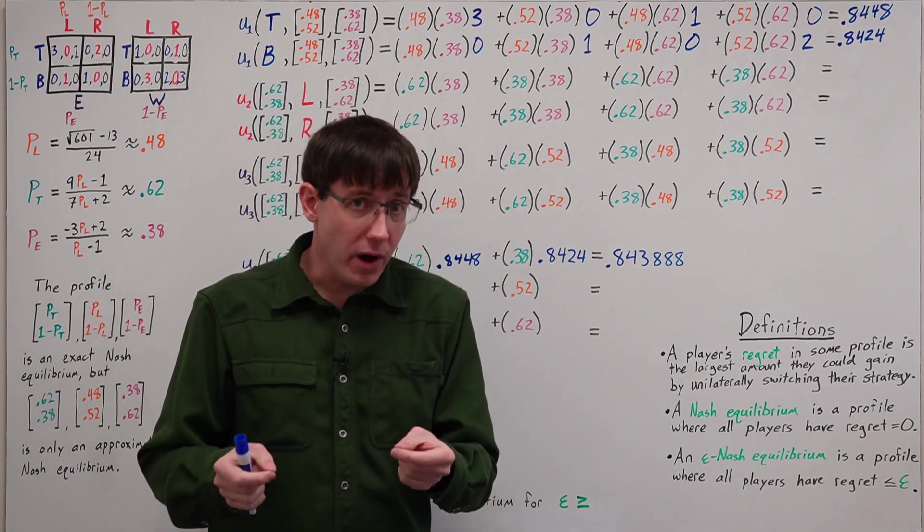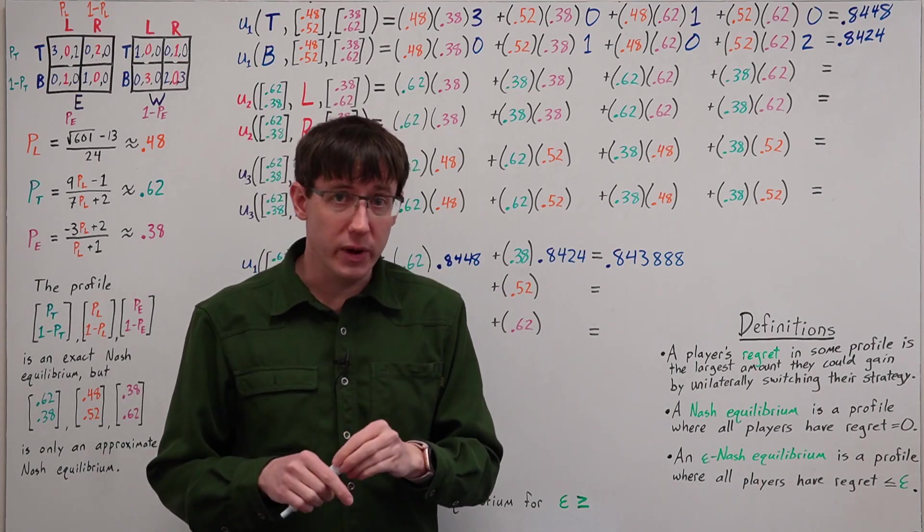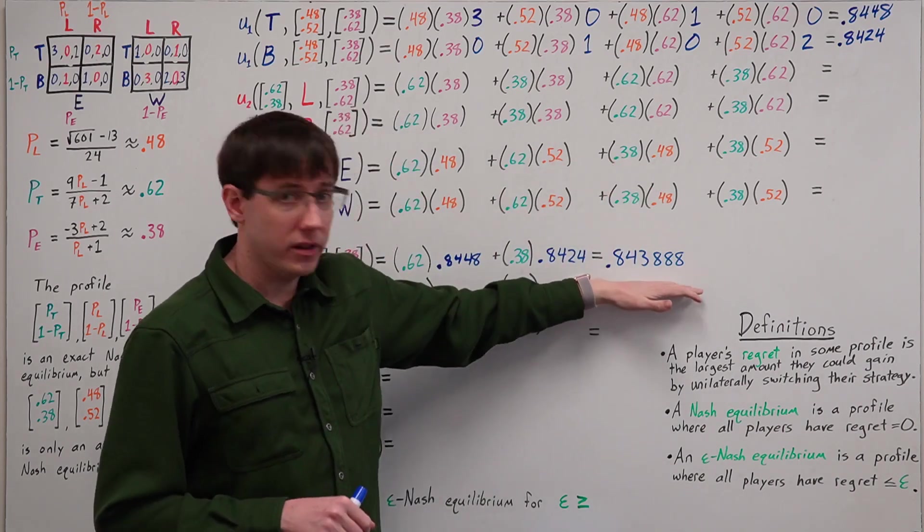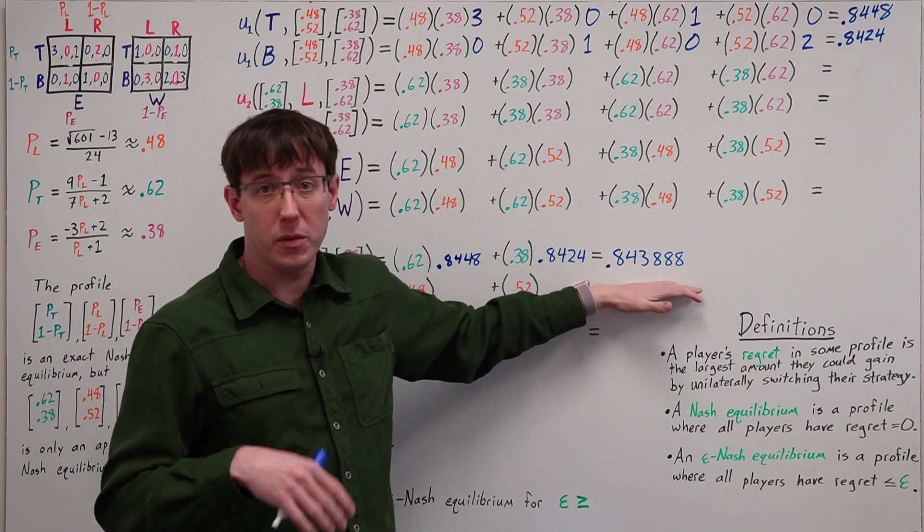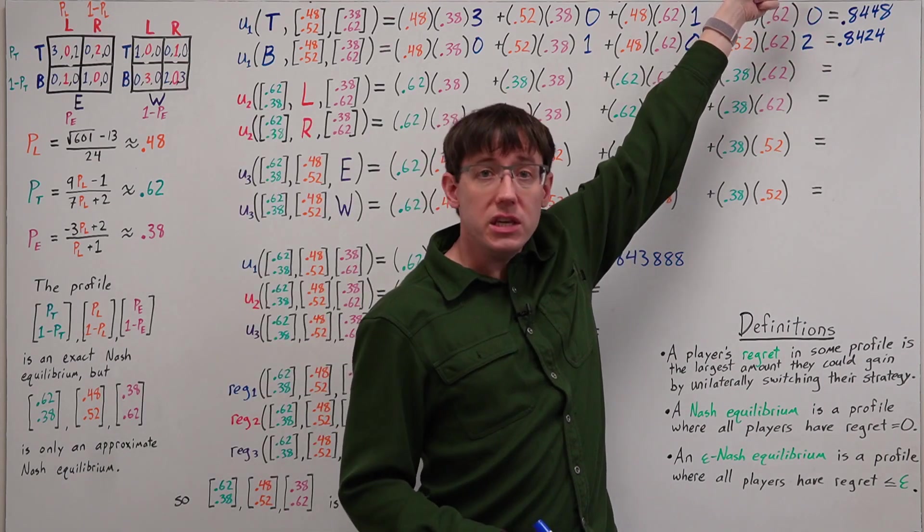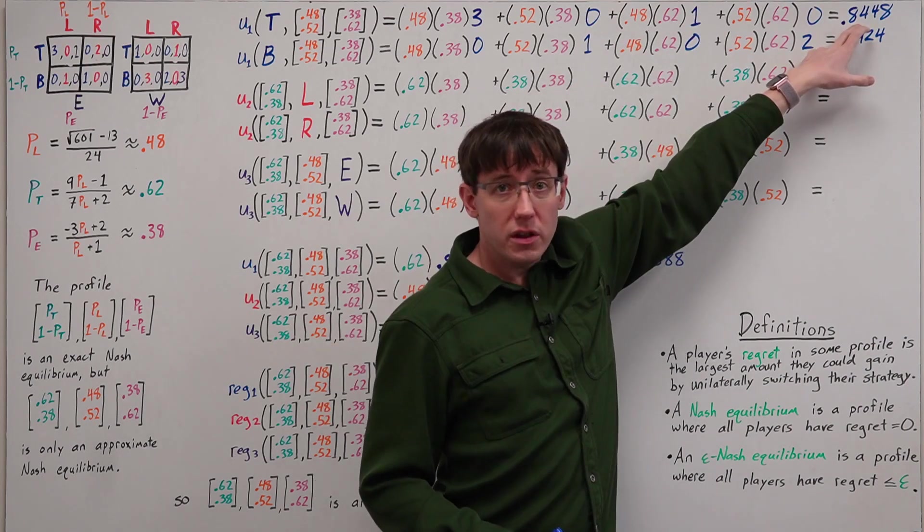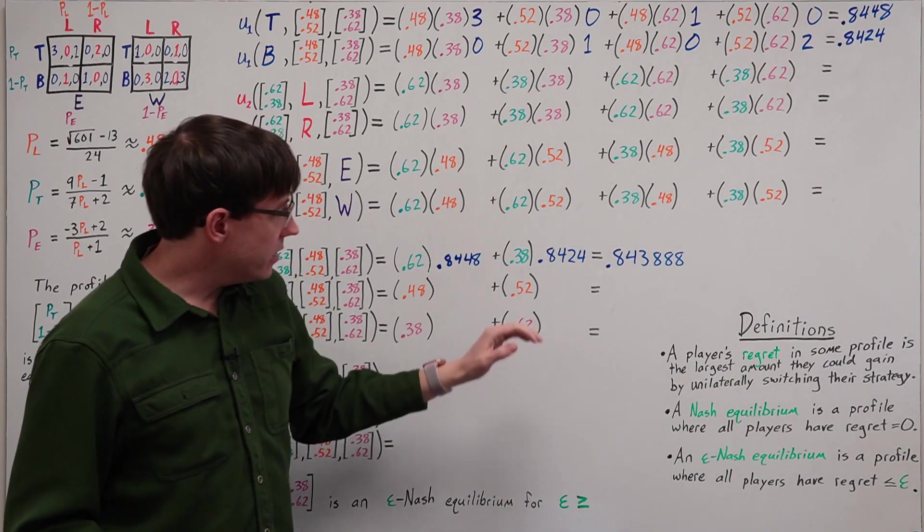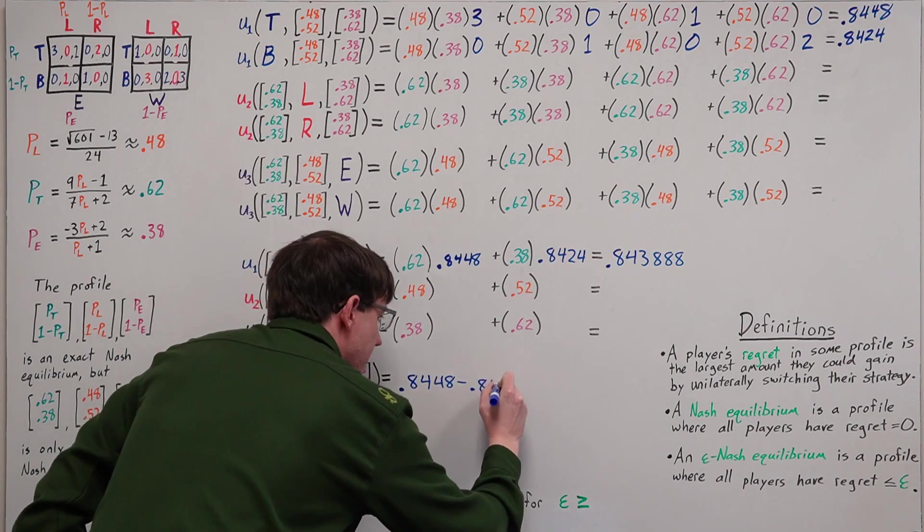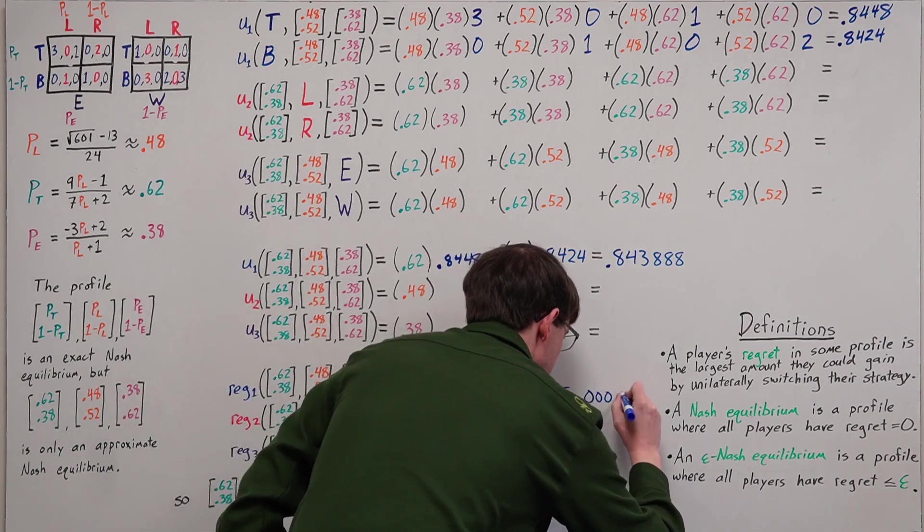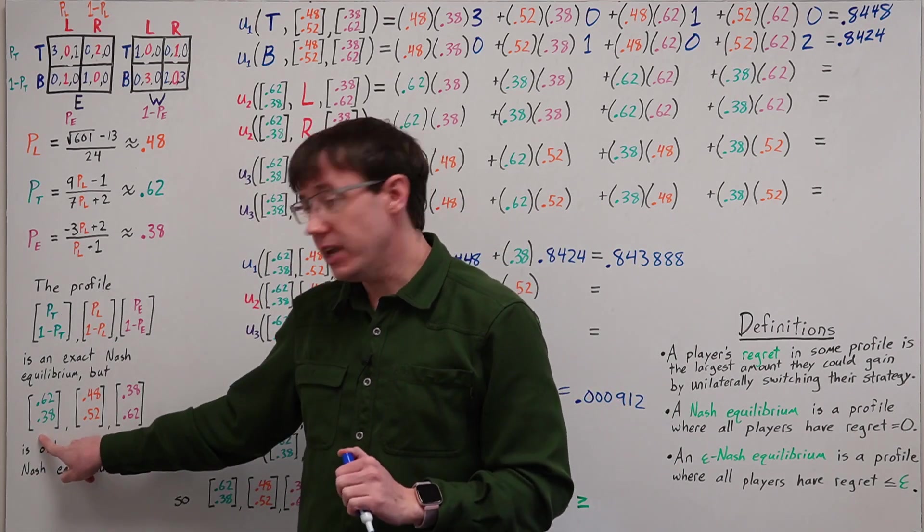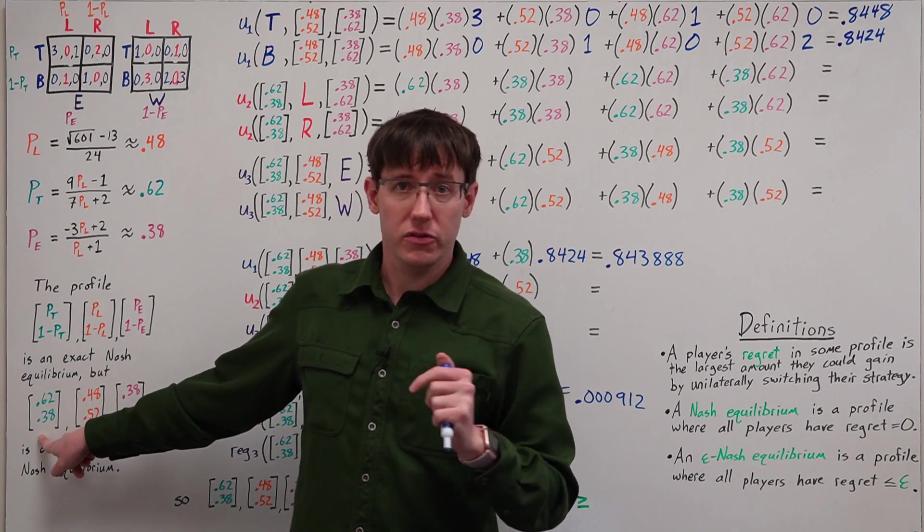And so player one's regret will be the difference between the utility of their best action and the utility of playing their part in the mixed strategy profile. Among their actions, T gives the best expected utility. So the utility of T minus the utility of the mix gives us the maximum gain player one could achieve by deviating away from their mixed strategy.